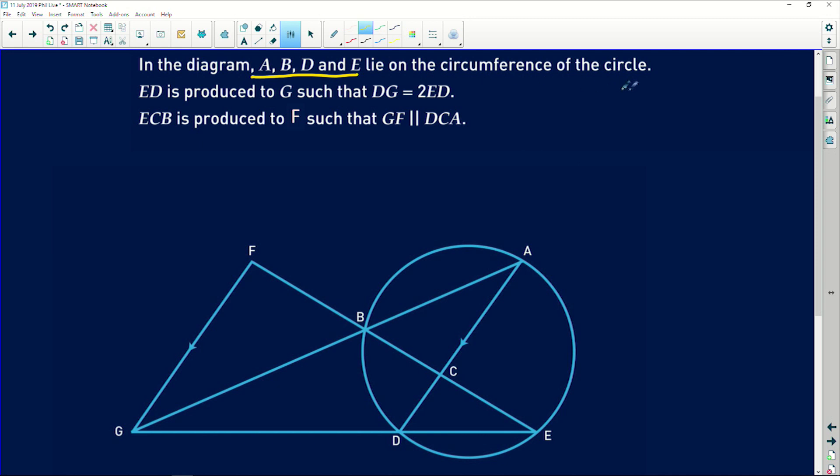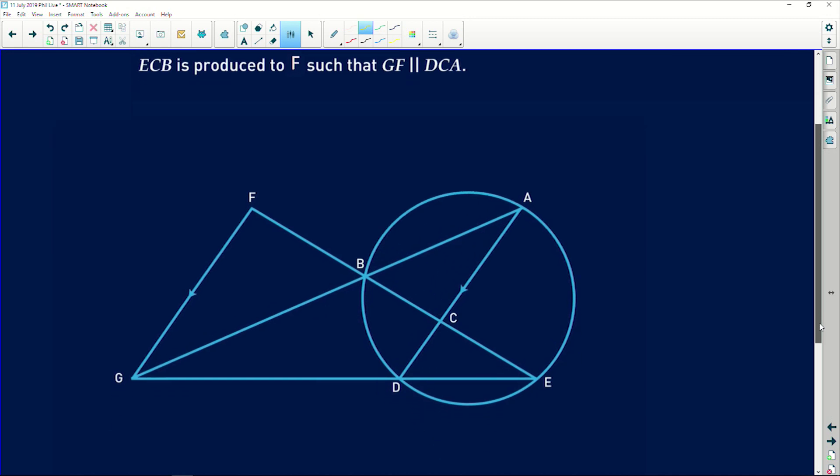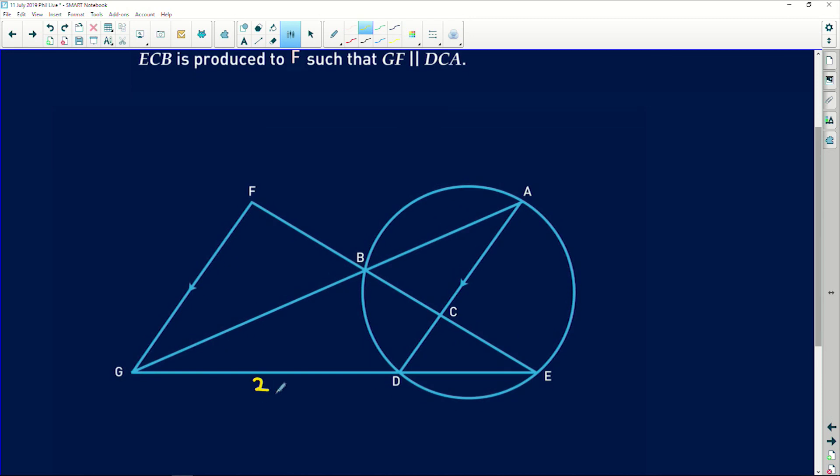Secondly, it says ED produced or is produced to G. ED is produced to G, such that DG is equal to 2ED. Okay, so we've got a factor of 2x here, if this is x, which means that this length is twice this length.